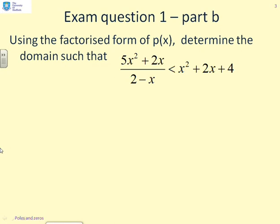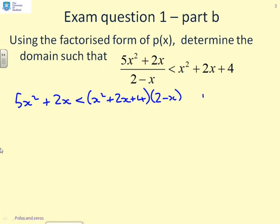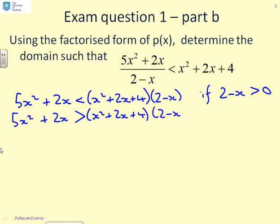Here's part 2. Using the factorised form of p(x), determine the domain such that 5x squared plus 2x over 2 minus x is less than x squared plus 2x plus 4. The first thing I'm going to do is remove the denominator term. So I can write 5x squared plus 2x is less than x squared plus 2x plus 4 times 2 minus x, if 2 minus x is positive. Or 5x squared plus 2x is greater than x squared plus 2x plus 4 times 2 minus x, if 2 minus x is negative — because multiplying by a negative changes the sign of the inequality.